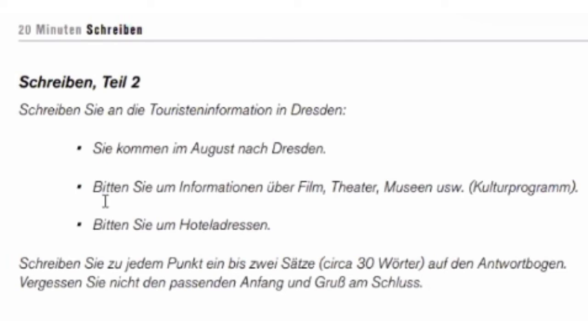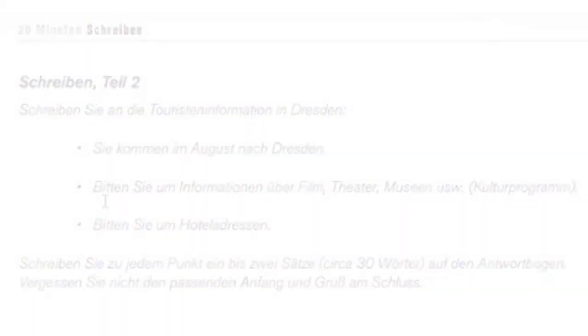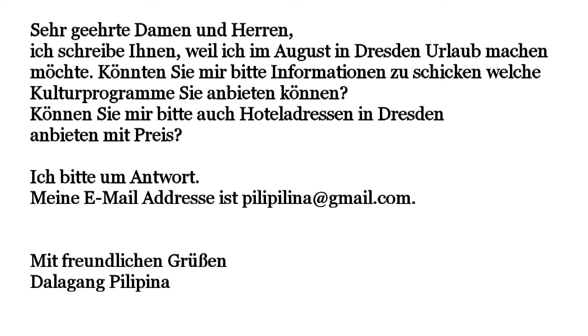For example: you are coming in August to Dresden, you are asking for information about film, theater, museum, and so on — about the cultural program — and the last category is asking for hotel addresses in Dresden, of course including prices.